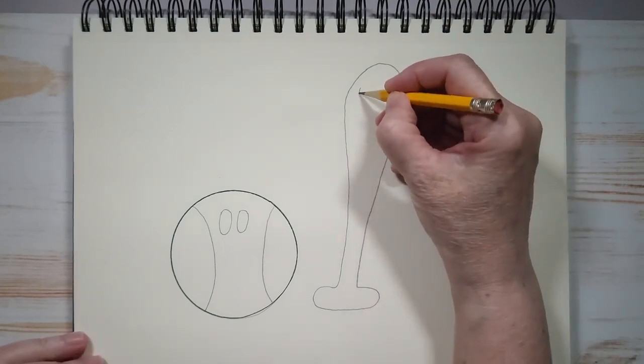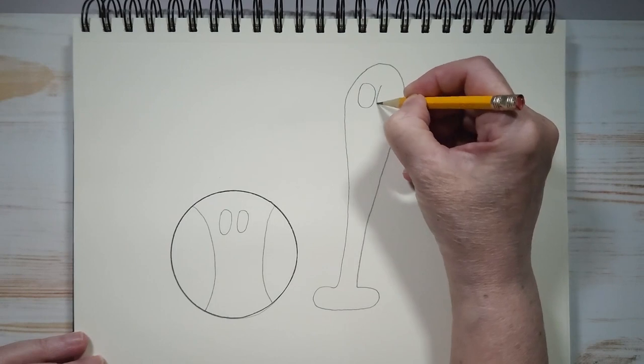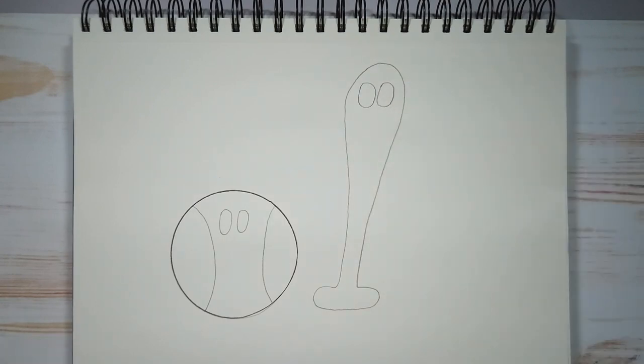And we can draw some ovals for the eyes as well. And we're going to leave them blank for now. We're going to add our color first.